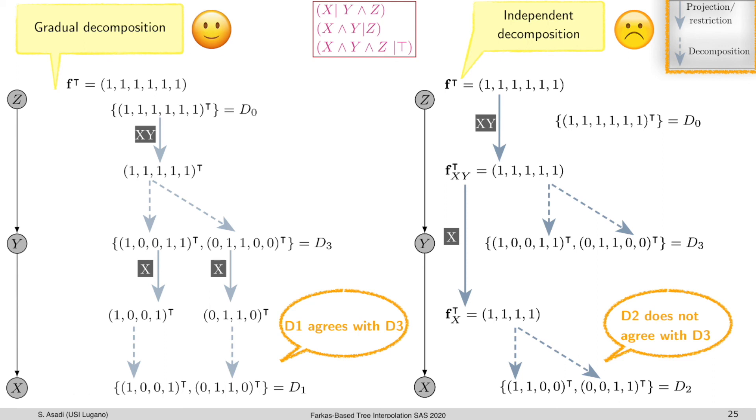With independent decomposition, we violate the monotonicity condition and the decomposition D2 doesn't agree with D3. But with gradual decomposition, TIP will be guaranteed in decomposing Farkas algorithm.